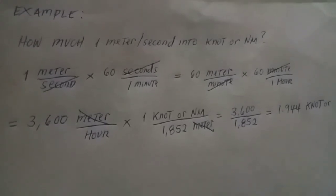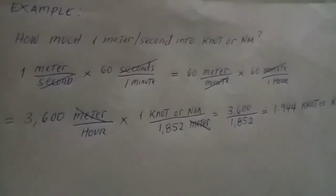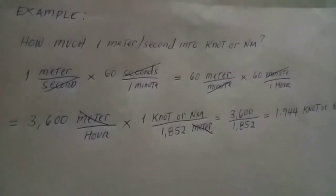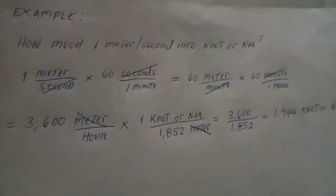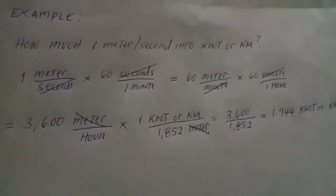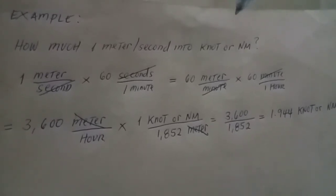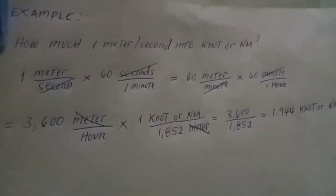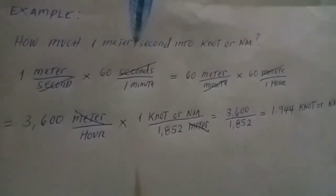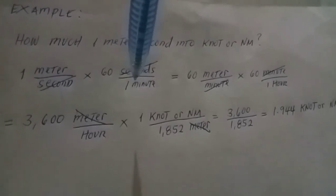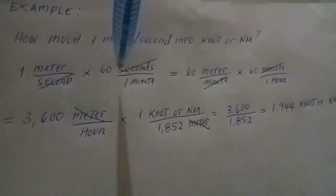Here's the example and solution for how to convert meters per second into knots or nautical miles per hour. For example, we have one meter per second. We write: one meter per second, times 60 seconds per minute — because one minute equals 60 seconds. We cancel out the seconds, and we have 60 meters per minute.